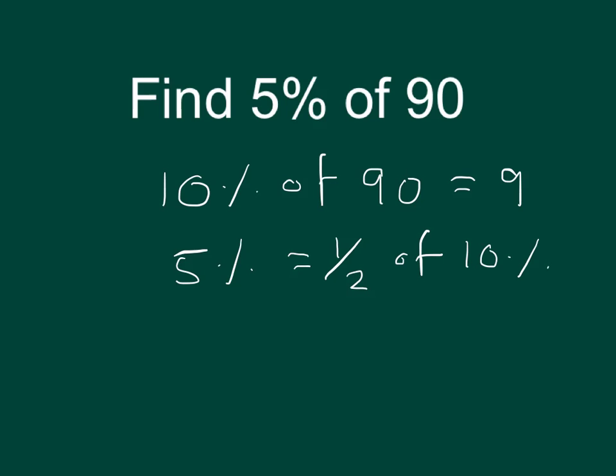To find 5% of 90, use the fact that you know that 10% of 90 is 9, and you should know that 5% is half of 10%. If 10% is 9, then 5% is half of 10%, half of 9 is 4.5. So your method for finding 5% is to find 10% first and half it.